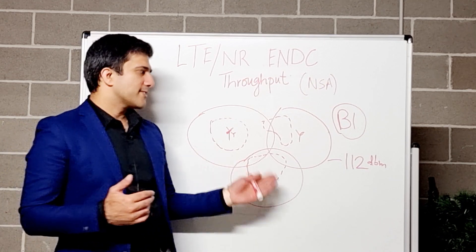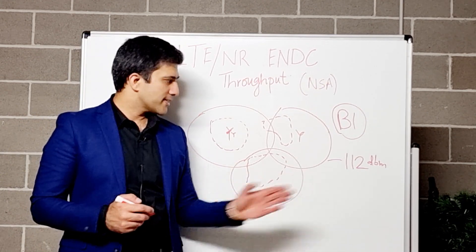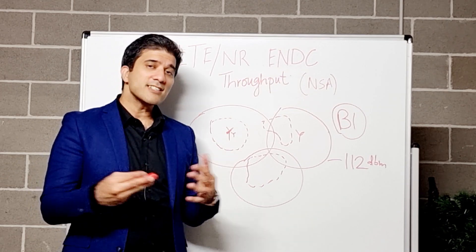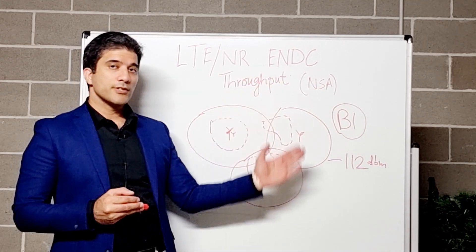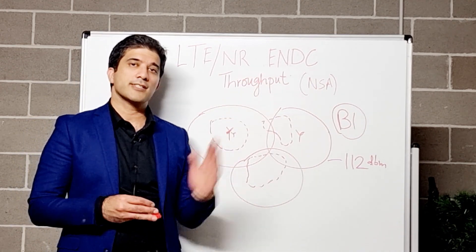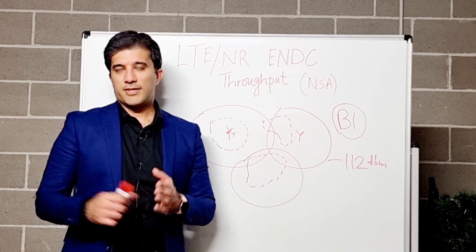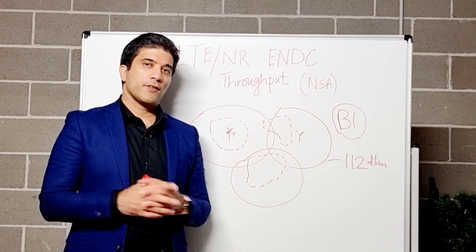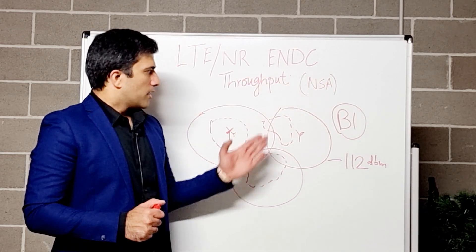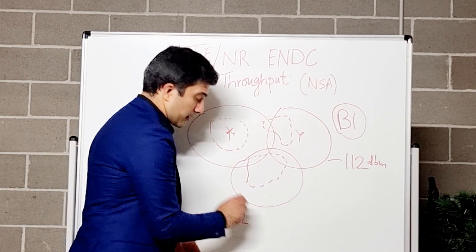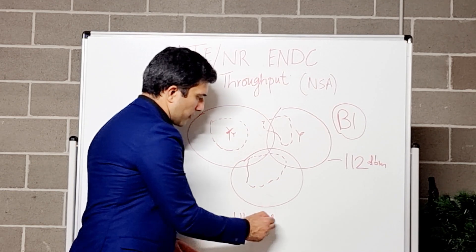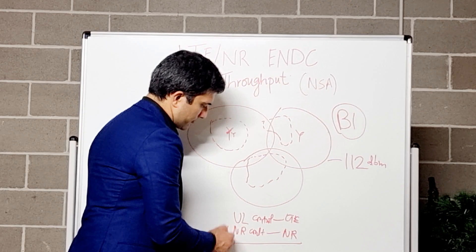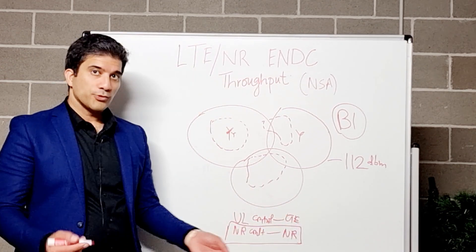Now, where does the point of balancing this coverage come in? If your UE has gone onto NR and is at -112 dBm, and if you are using a split bearer at the PDCP layer, your major user plane traffic will start coming from the NR site. Alternatively, you can configure it so that majority of traffic comes from the LTE site. In most NSA networks you want NR to be utilized, so majority of uplink control will go through LTE and some NR control and ACKs will go through NR uplink.